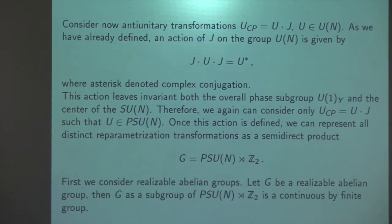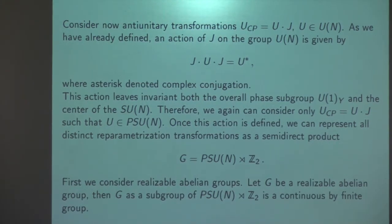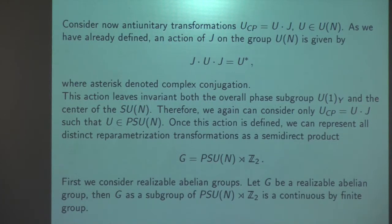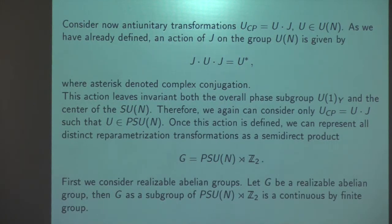We started with abelian groups. We assume that we have an abelian group and the question is whether you can get this group as a realizable symmetry group of such a potential. Apparently, we get a quite good answer — maybe not absolutely complete, but quite clear and near to complete. For every precise value of N, you can compute all realizable abelian groups on a computer, and the growth is very logarithmic.